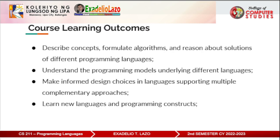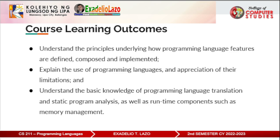For the course learning outcomes: describe concepts, formulate algorithms and reason about solutions of different programming languages. Understand the programming models underlying different languages. Make informed design choices in languages supporting multiple complementary approaches. Learn new languages and programming constructs. Understand the principles underlying how programming language features are defined, composed, and implemented. Explain the use of programming languages and the appreciation of their limitations. Understand the basic knowledge of programming language translation and static program analysis, as well as runtime components such as memory management.